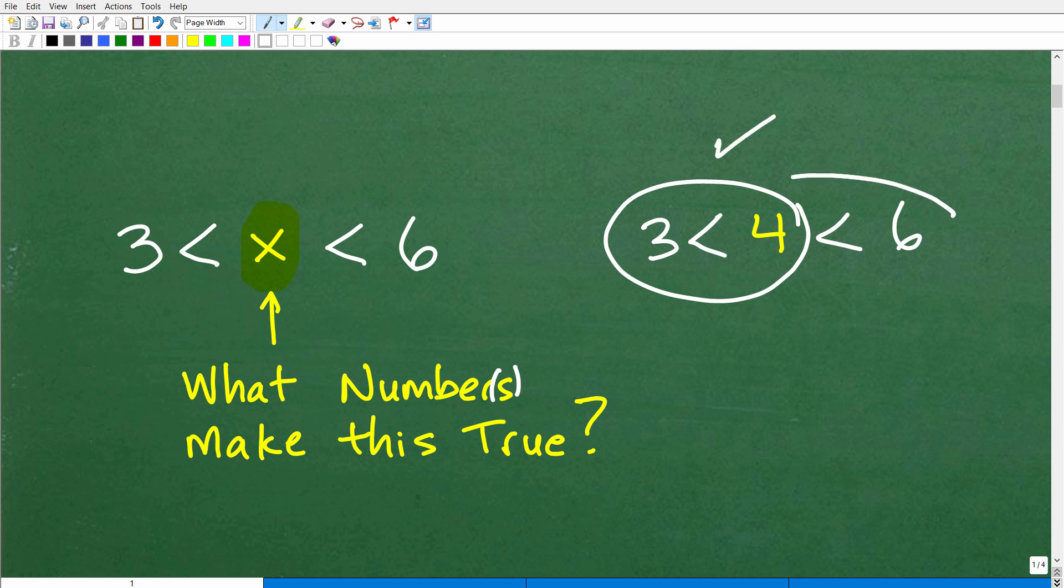this checks right here, and at the same time, four is less than six. So four is what we call a solution. It is a solution to this inequality.